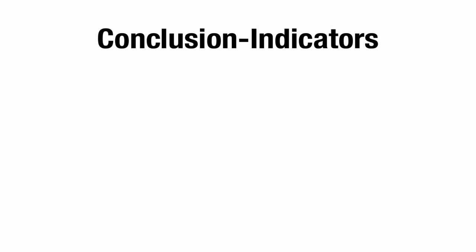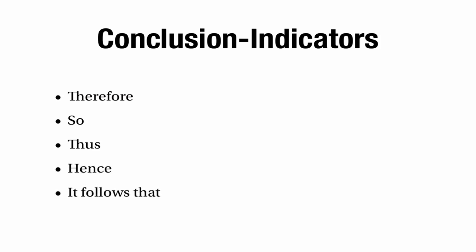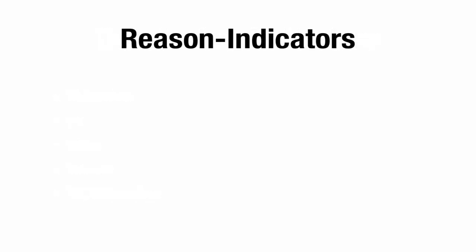For example, there are various words that tell you you're about to hear a conclusion — we've already come across one: 'therefore' tells you you're about to hear a conclusion. But there are more: 'so', 'thus', 'hence', 'it follows that' — and there are other phrases too. These are all words and phrases that tell you you're about to hear a conclusion. And there are lots of reason indicators as well — perhaps the most common ones are 'because', 'since', and 'as'. Those are all words that tell you you're about to hear a reason. So often when you're reading an argument, the task of identifying the parts is made a lot easier. And when you're writing arguments, I hope you would use these words to make the structure of your own argument really clear.